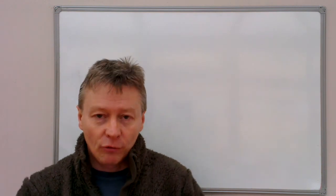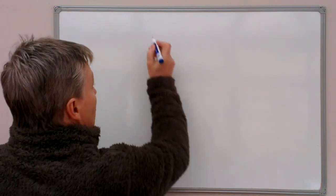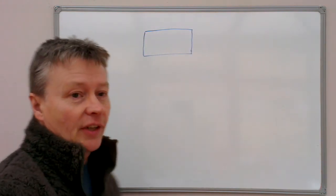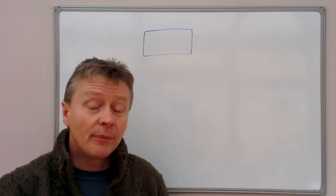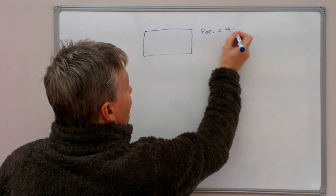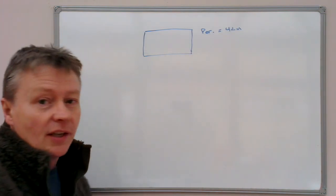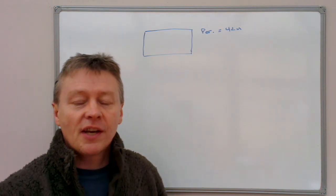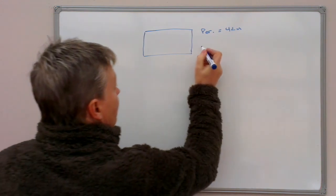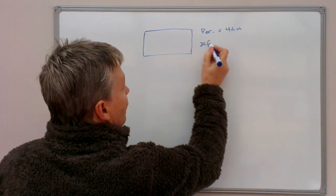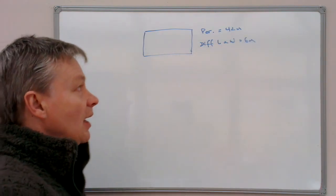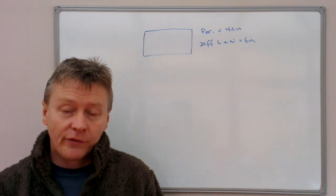This particular problem deals with a rectangle. The rectangle itself is like that. The two pieces of information that we're given about the rectangle is that the perimeter equals 42 metres. And we're also given a little bit of information that says the difference between the length and the width is 6 metres. So the difference between length and width equals 6 metres. Those are the only two pieces of information that we've been given.